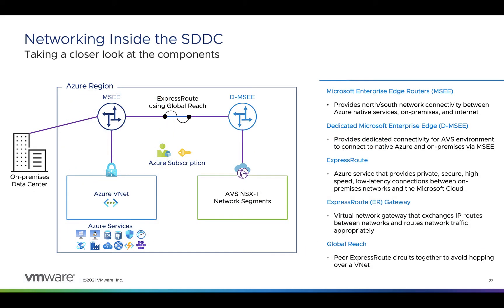Looking inside the SDDC at what AVS is running on, the bare-metal hosts used for AVS are different from the server fleet that hosts other Azure IaaS services — they are in a dedicated zone within the Microsoft Data Center. When an Azure VMware Solution Private Cloud is provisioned, an ExpressRoute connection is created between the dedicated Microsoft Enterprise Edge and the Azure Global Backbone. This allows the AVS environment to communicate with Azure Public Services and, if you choose, the internet.